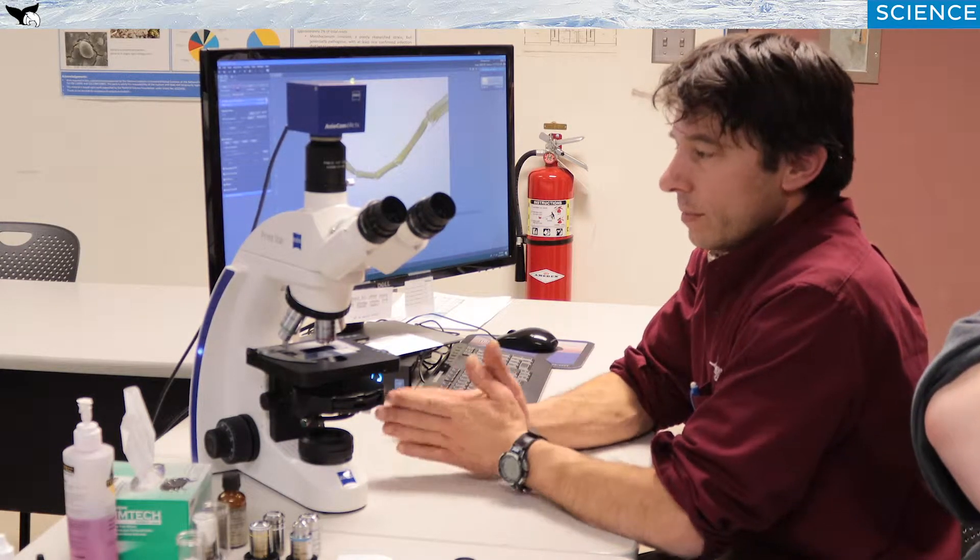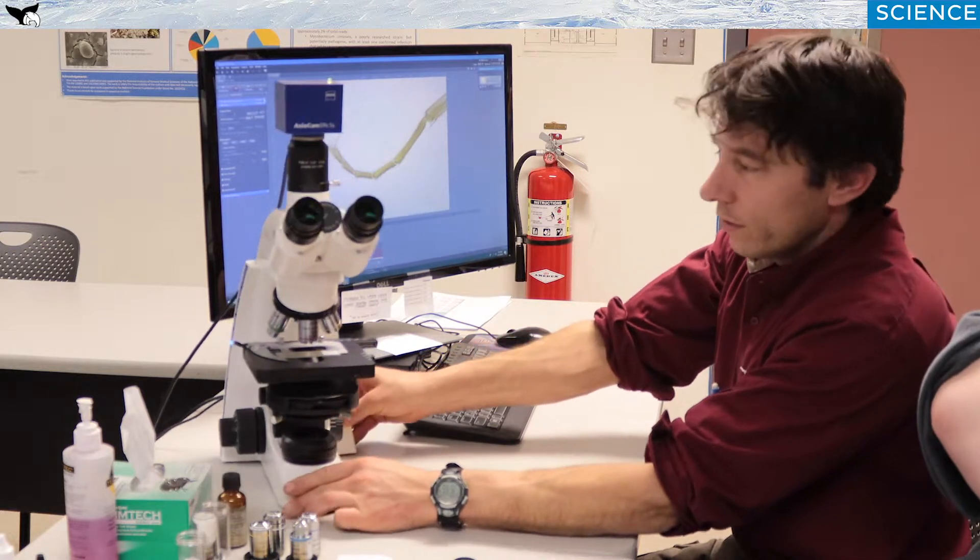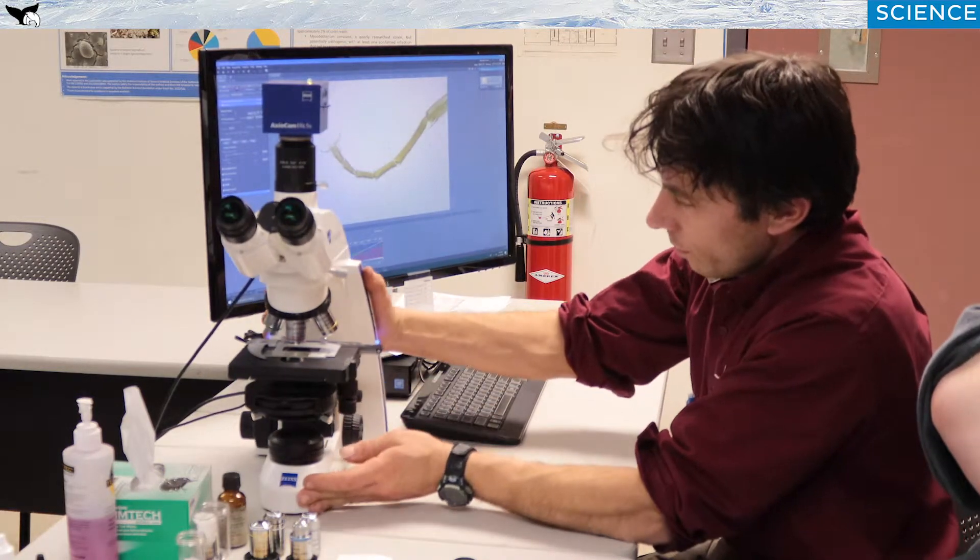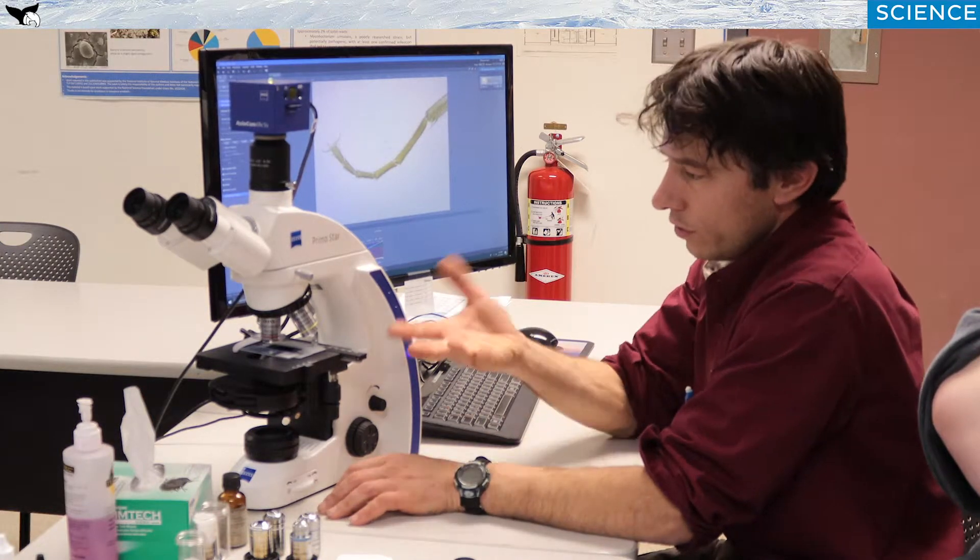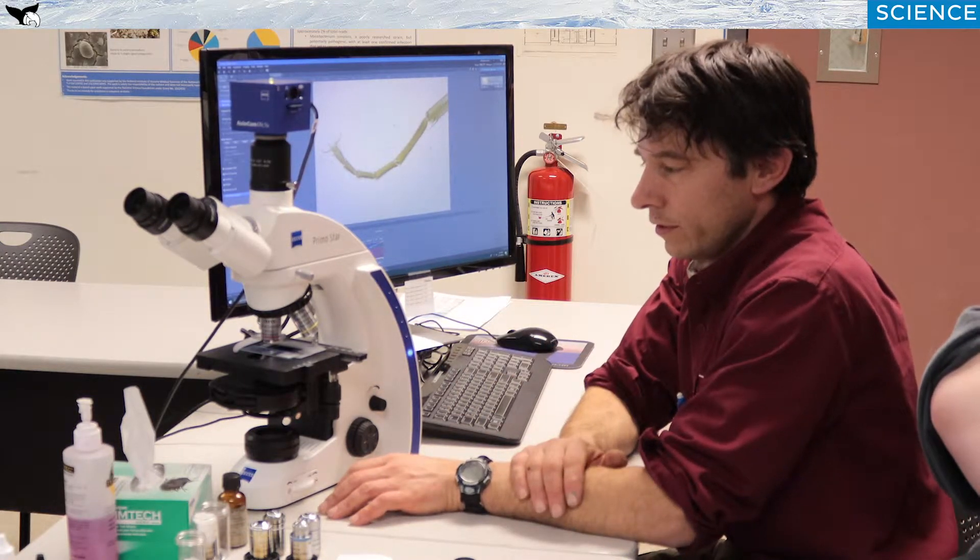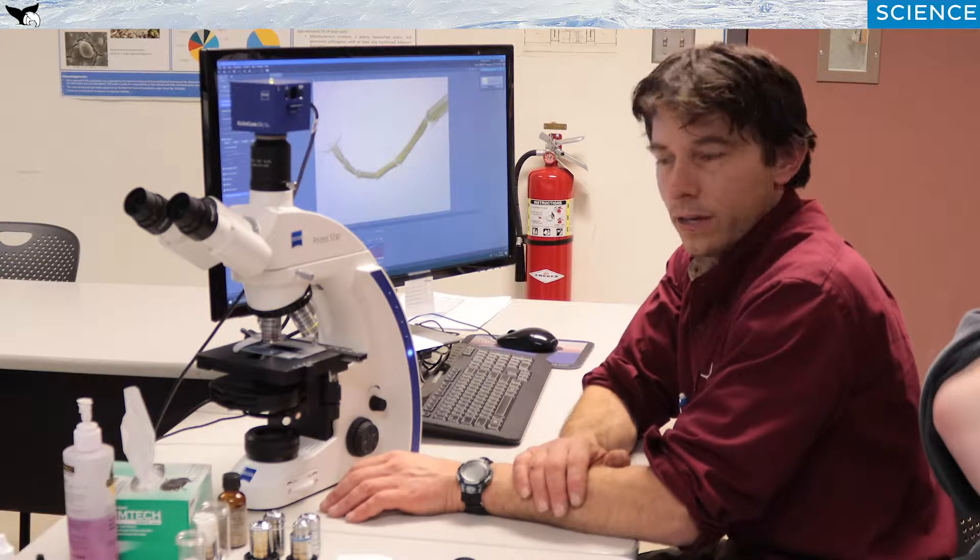So to begin with, this is a compound microscope. There are many different types of microscopes, but this is the most common. Some are inverted, which are used for tissue culture, and then there are dissecting microscopes which are used for lower magnification.